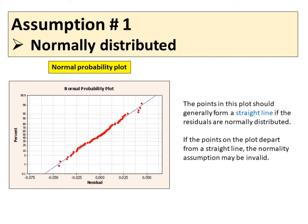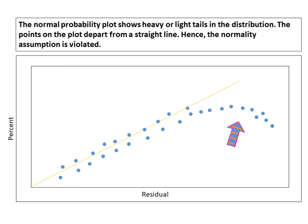The points in this plot should generally form a straight line if the residuals are normally distributed. If the points on the plot depart from a straight line, the normality assumption may be invalid. The normal probability plot shows heavier tails in the distribution. The points on the plot depart from a straight line, hence the normality assumption is violated.